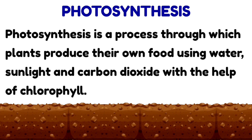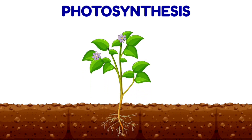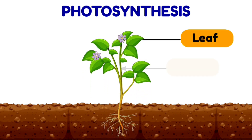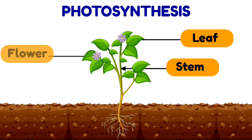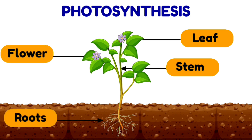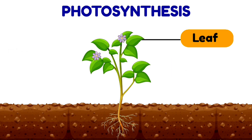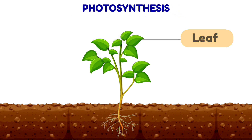Plants have many parts such as leaf, stem, flower, roots, etc. However, the process of photosynthesis generally takes place in the leaf. That is the reason the leaf is also known as the food factory of the plant.